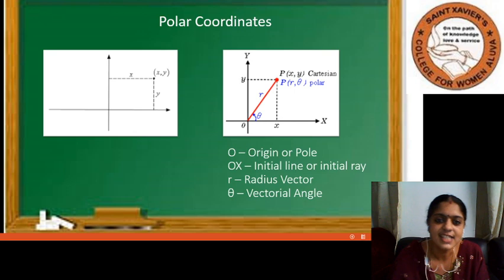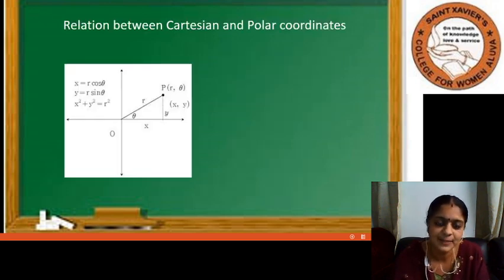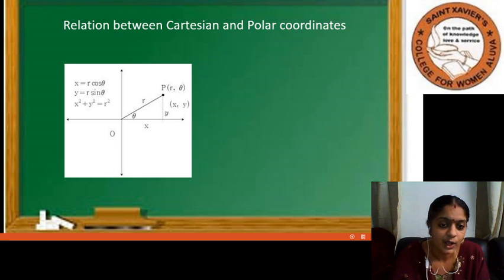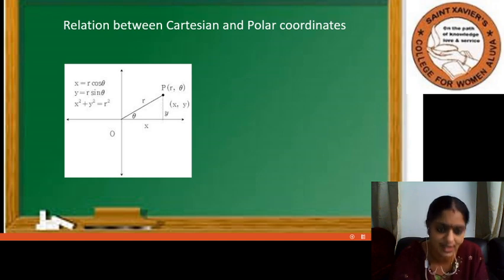Let us see what is the relation between Cartesian coordinates and polar coordinates. Consider the right-angled triangle. Using trigonometric relations, we have sin theta equal to opposite side by hypotenuse, that is Y by R, so that Y equals R sin theta. Similarly, cos theta is adjacent side by hypotenuse, which is X by R, so X equals R cos theta.